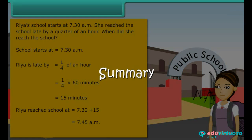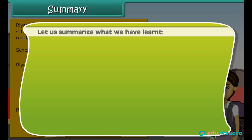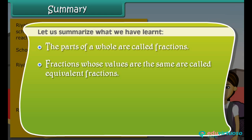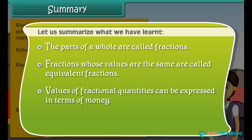Summary: let us summarize what we have learned. The parts of a whole are called fractions. Fractions whose values are the same are called equivalent fractions. Values of fractional quantities can be expressed in terms of money. Fractions are used to find time.